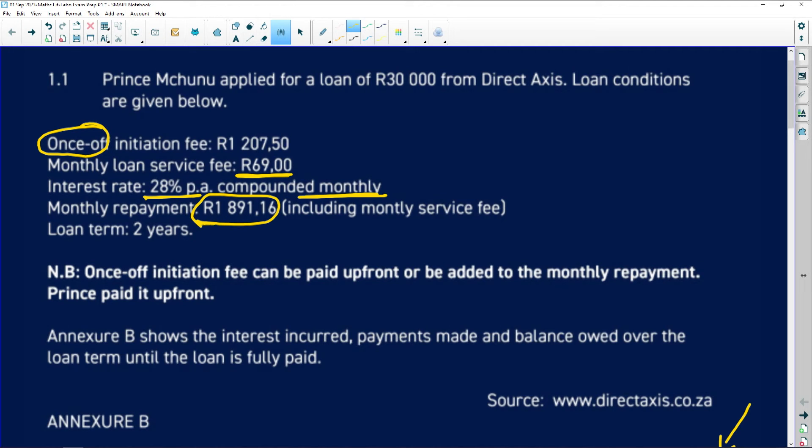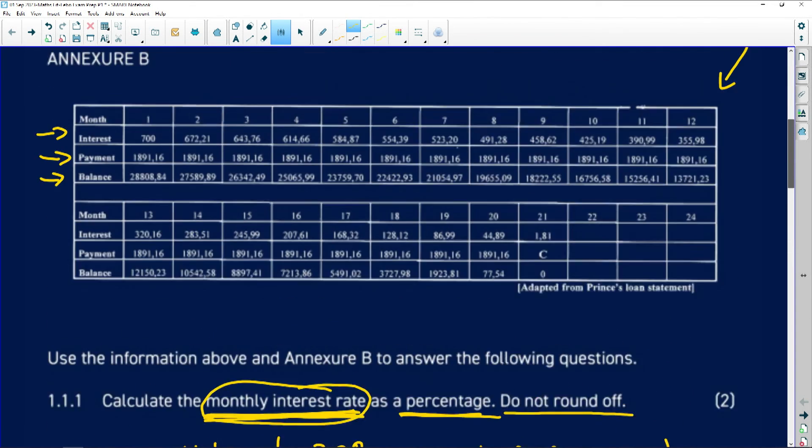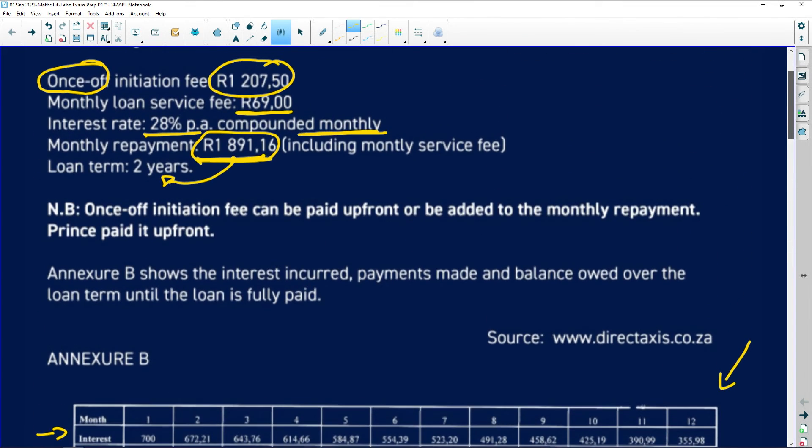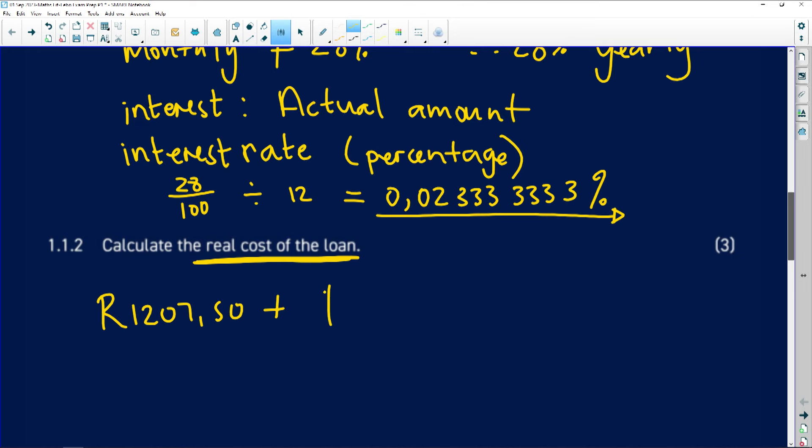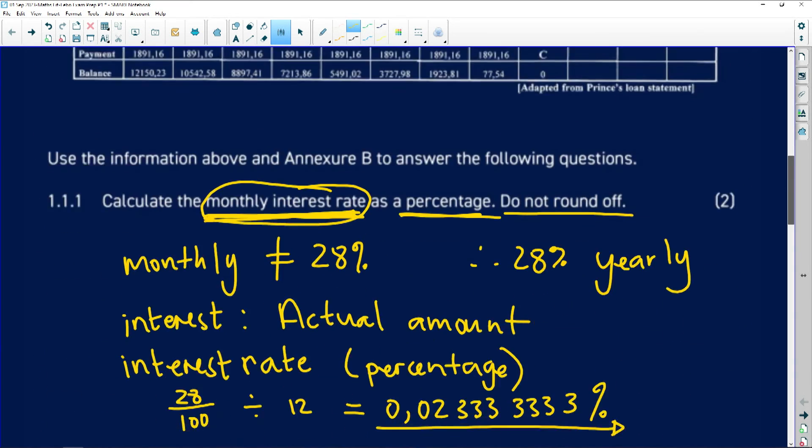all we need to do is take this and multiply it by two years. And then we just add our service fee, our initiation fee. So our initiation fee is 1,207. So that's 1,207.50 plus 1,891, comma 16.